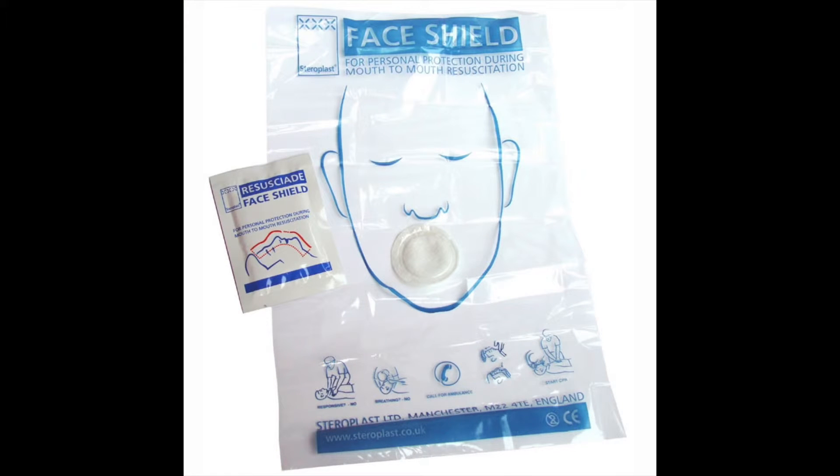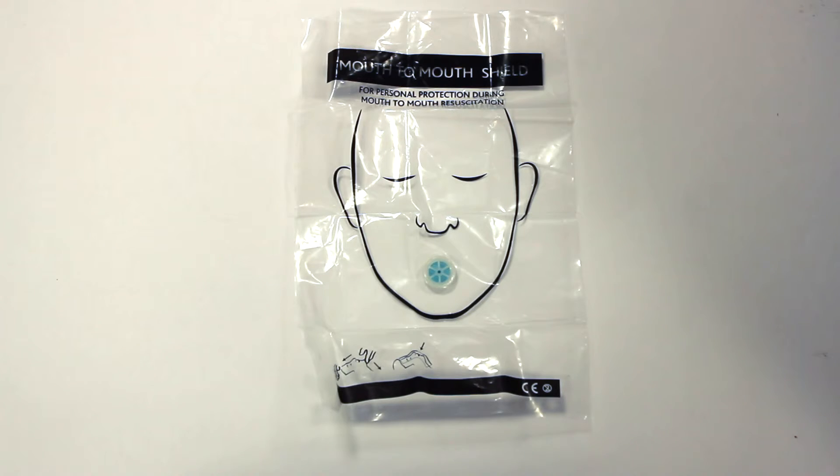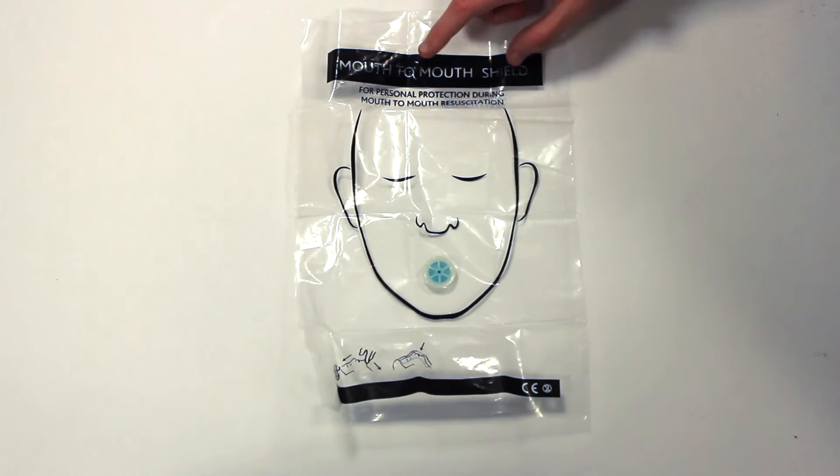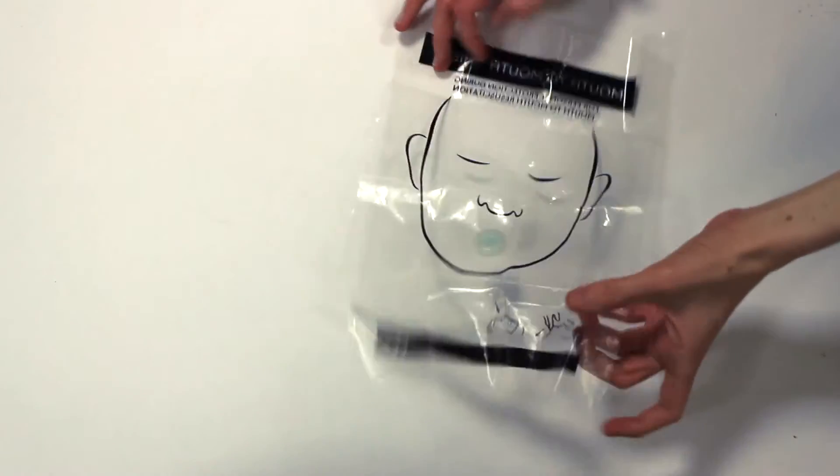Next, it is advisable to use a face shield, if you have one, when performing CPR, as a hygienic barrier between you and the casualty. This is a plastic square with a mouthpiece in the middle, and there is a face diagram on both sides.